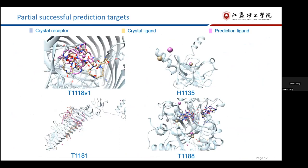There are partial successful targets predicted by our group. For T1118V1, the binding sites of the ligand are predicted correctly. But the conformation of ligands are far away from the crystal structure. You can see here.